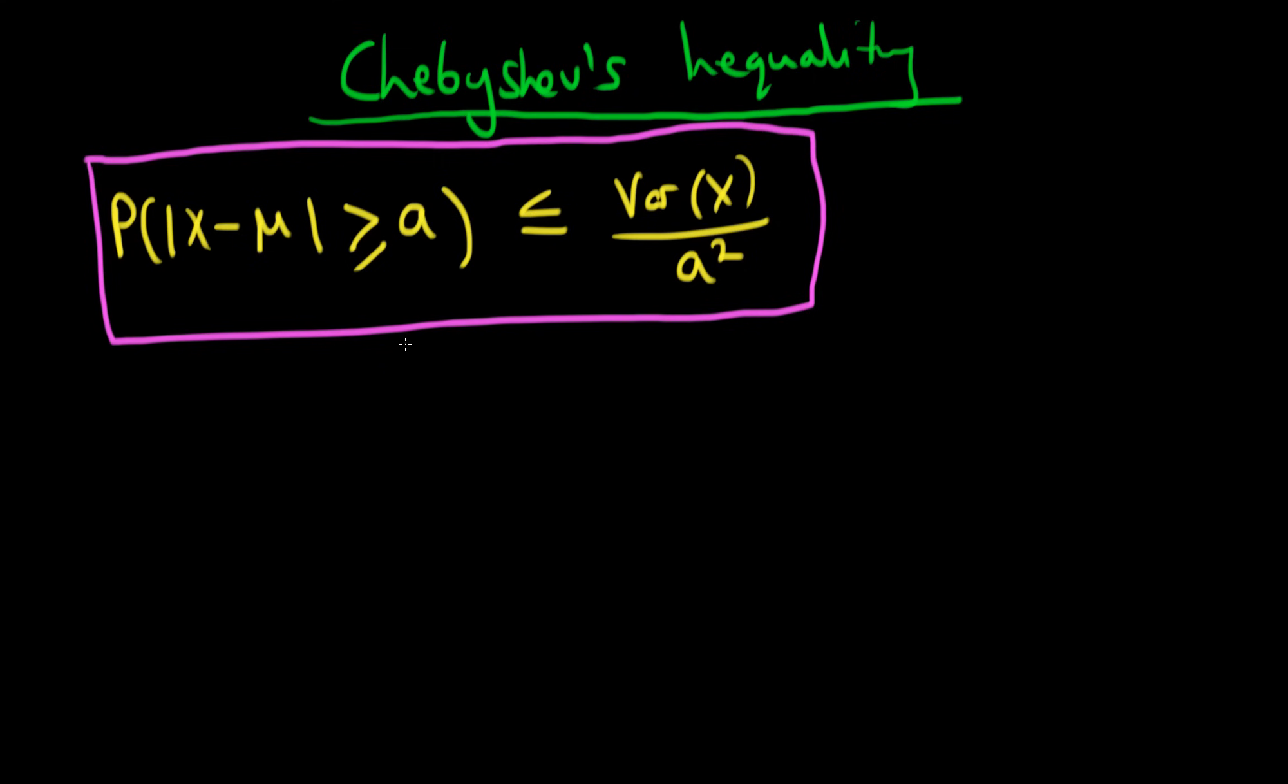So what is Chebyshev's inequality? Well it says that the probability that some random variable x differs from its mean μ by some amount which is greater than or equal to a, which is just a constant, is going to be less than or equal to the variance of that random variable x divided by a squared.